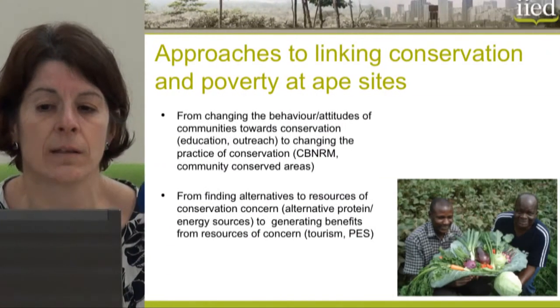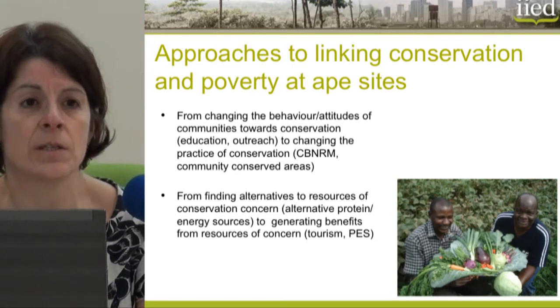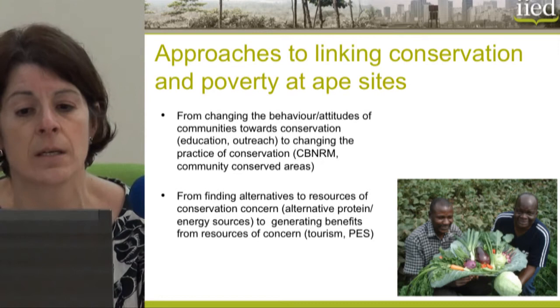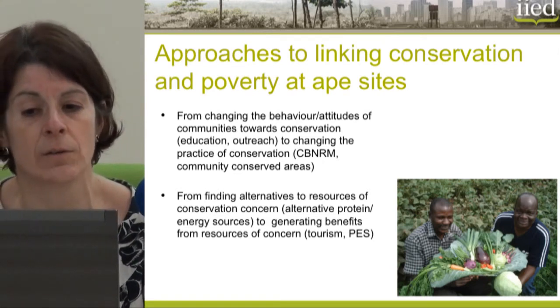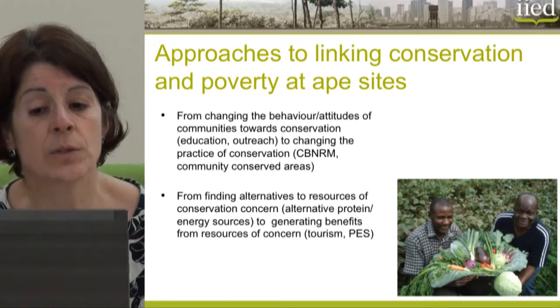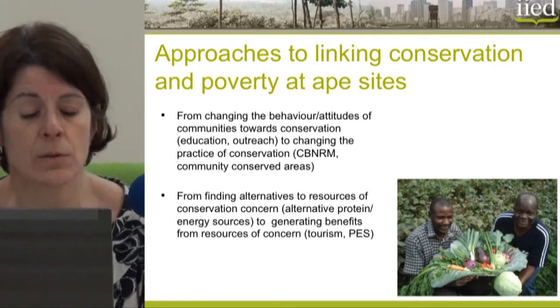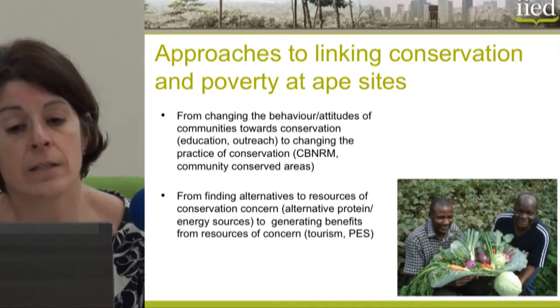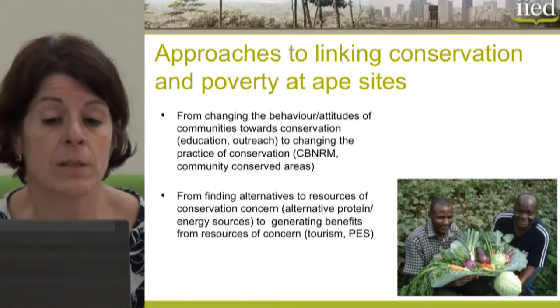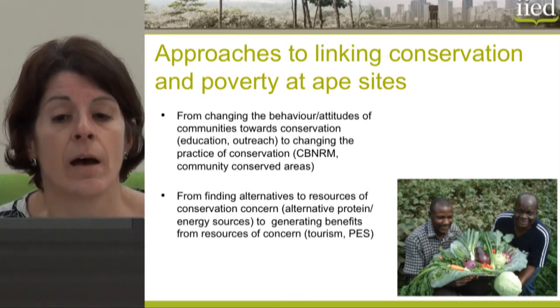To recap, conservation organisations and agencies use a whole variety of approaches to link conservation with poverty in the sites. These range from changing the behaviour of communities through education and outreach programmes, to involving communities in conservation through community-conserved areas. They also look at finding alternatives to resources of concern, such as alternative forms of protein rather than bushmeat, or alternative sources of energy — through to generating benefits from those resources, such as payment through environmental services, and this is where tourism fits in.